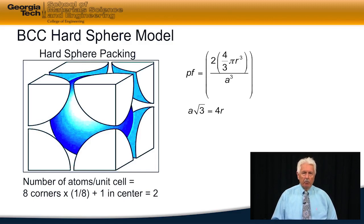We know that they touch along the body diagonals, so we can relate A and R through the expression A₀ times the square root of 3 equals 4R.